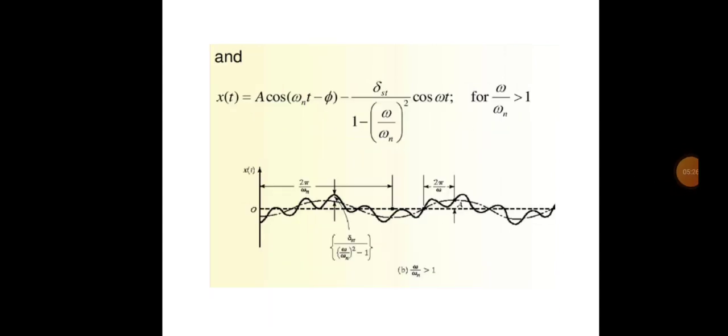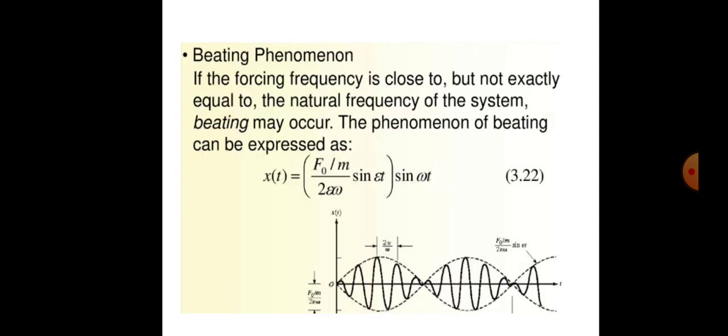Another case is: x(t) = A cos(ωₙt − φ) − [δₛt / (1 − (ω/ωₙ)²)] · cos(ωt), for the condition where omega upon omega-n is greater than one. This leads into the beating phenomena.